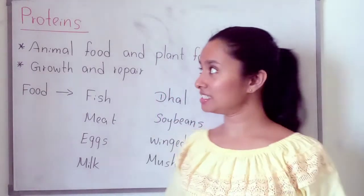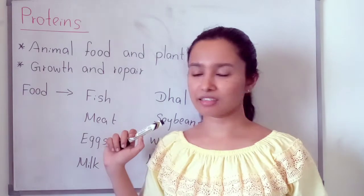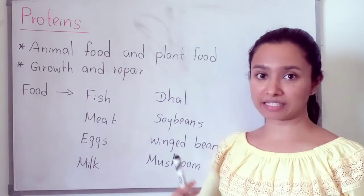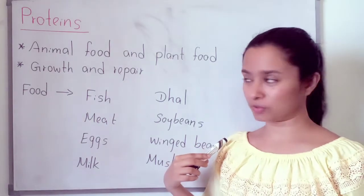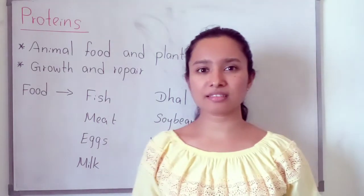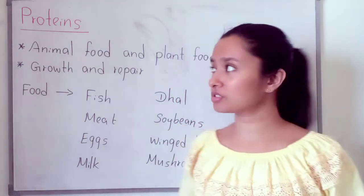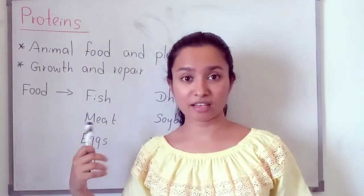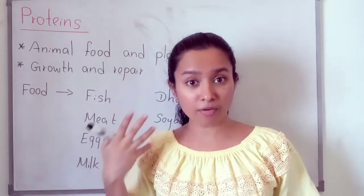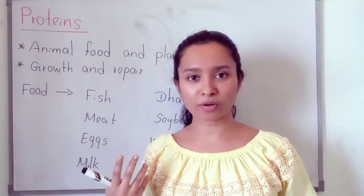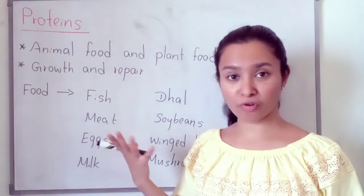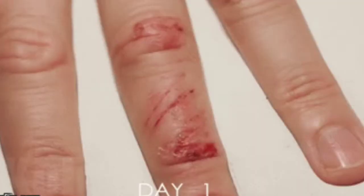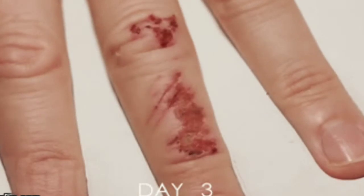The second main nutrient is proteins. We can take proteins from animal food and also from plant food. The main function of proteins is growth and repair. For growing of our body we need proteins, and for repairing our body we also need proteins.